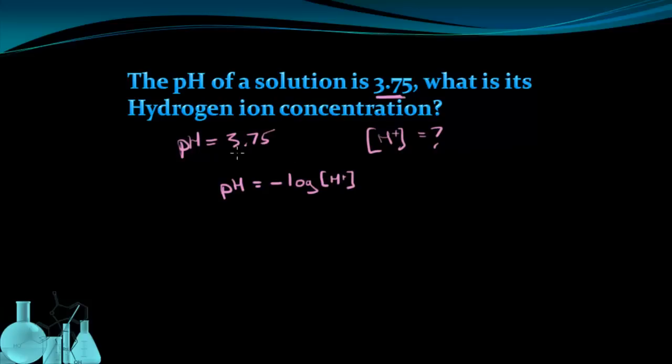Now I can plug things in. I know 3.75, so 3.75 equals the negative log of what I'm missing, my H+ concentration.